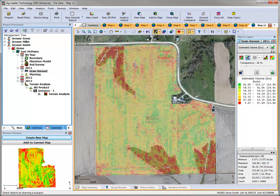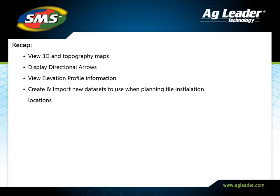You have now learned how to view 3D and topography maps, display directional arrows, view elevation profile information, and create and import new datasets to use when planning tile installation locations. By using a combination of the advanced visualization options and the wide range of data types that can be imported or created in the SMS software, you can create tile plans with all needed field details at your disposal. Please review the other tutorials to learn how to utilize other key features of the software.